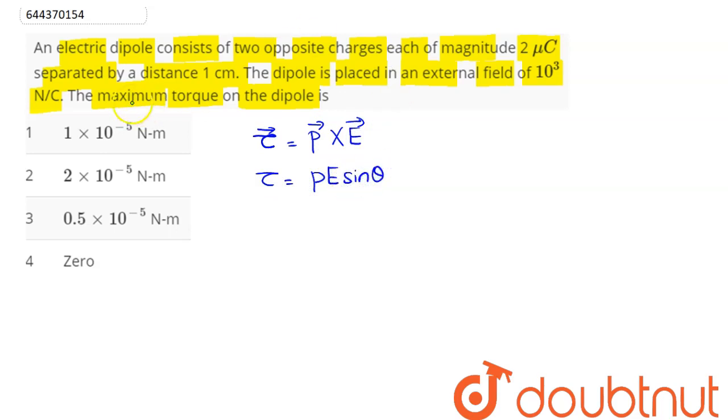Now here it says the torque has to be maximum, so we can say for maximum torque the value of sine theta has to be maximum, since dipole moment is constant and electric field here is constant. So sine theta can vary as theta can vary, and sine theta maximum value is 1, hence theta here is equal to 90 degrees.